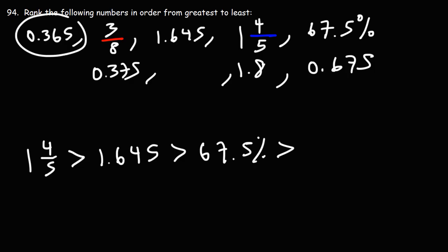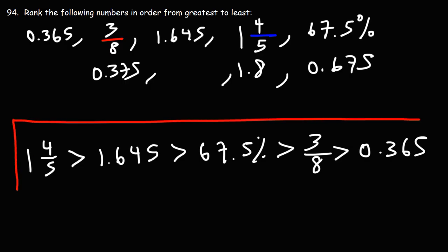Between these two, 0.365 and 0.375, 0.375 is greater than 0.365 because 7 is greater than 6. But we'll write 0.375 in its original format as 3 over 8. And then the last number, the lowest number, is 0.365. So that's how we can rank those numbers from greatest to least.